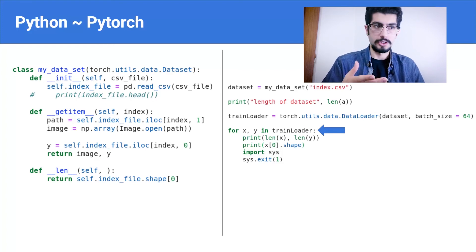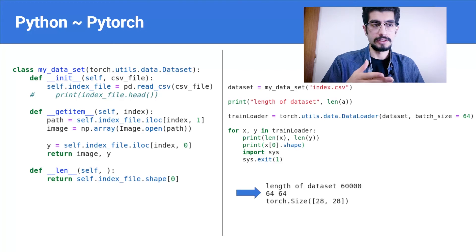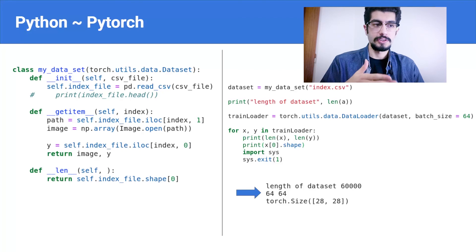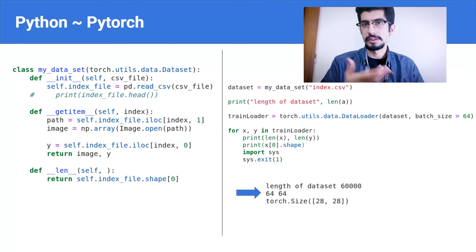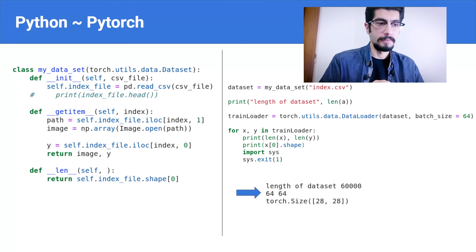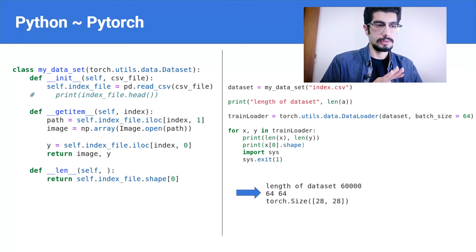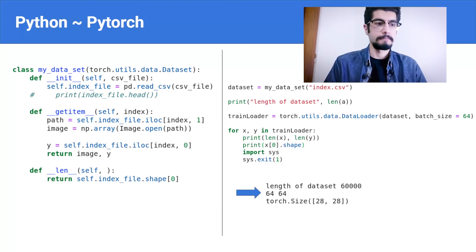You can see that the length of the dataset is 60,000 images, each batch has 64 images, Y labels has 64 labels for those images — which makes sense — and each image is 28 by 28. So everything works fine. It was a kind of in-depth introduction to PyTorch.